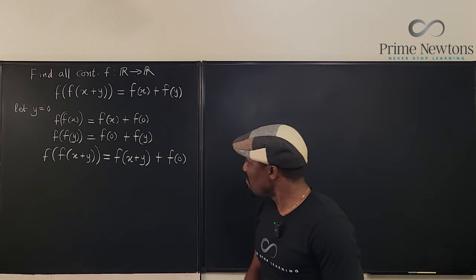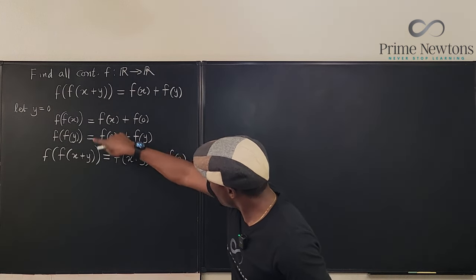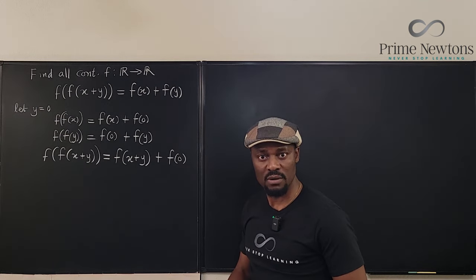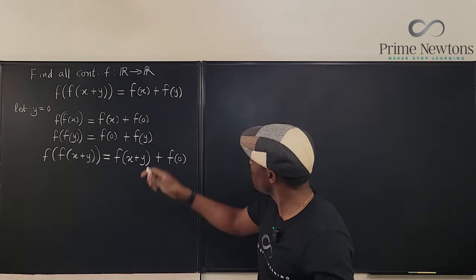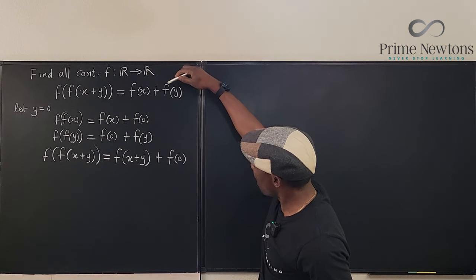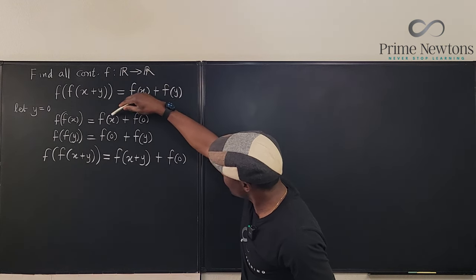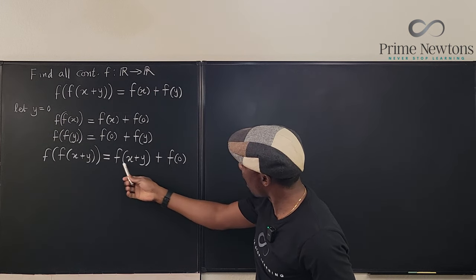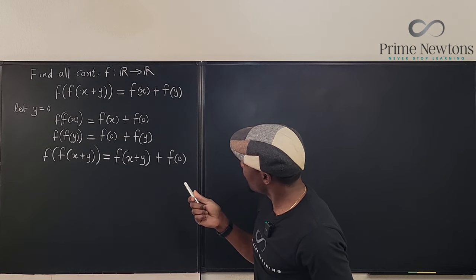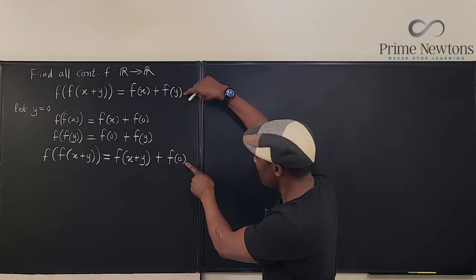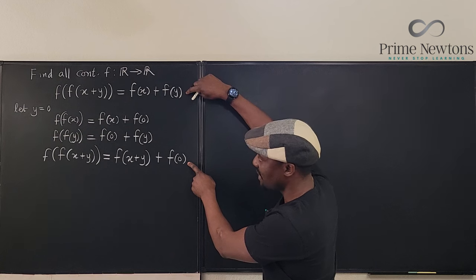This, this, the same picture. Whatever you put here is going to come out here plus f of zero. Everybody has f of zero. So it means I can work with what I have here. I don't have to deal with this second composition anymore. But I know, remember from the original, this is f of x plus f of y. This has f of x. This has f of y. This has f of x plus y. So it means this is equal to this. Do you see that? This is equal to this. Because this is this, and it's this.